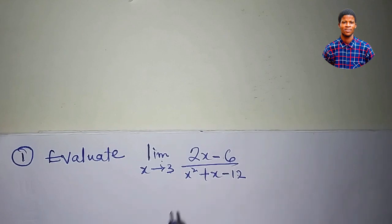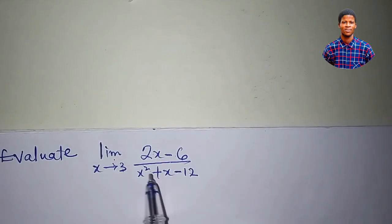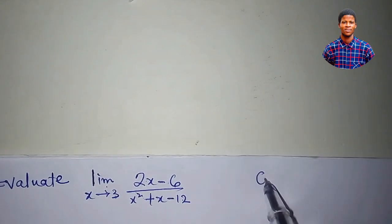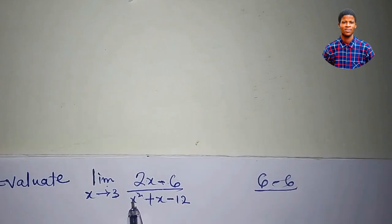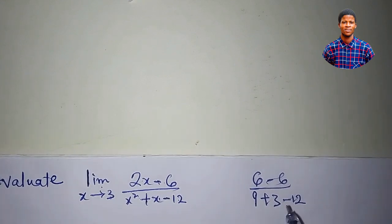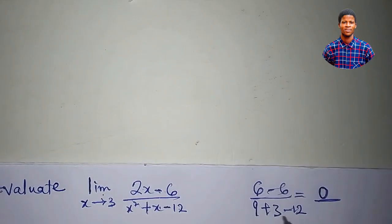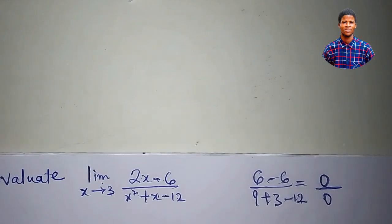Evaluating it normally means plugging in the value of x into this expression. If I plug in x equal to 3, this would be 2 times 3, which is 6. So we get 6 minus 6 divided by 3 squared plus 3 minus 12. That's 0 divided by 0 — this is an indeterminate form, so we can't take this as the limit.